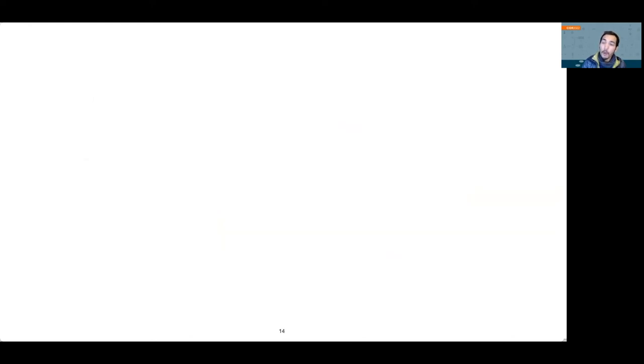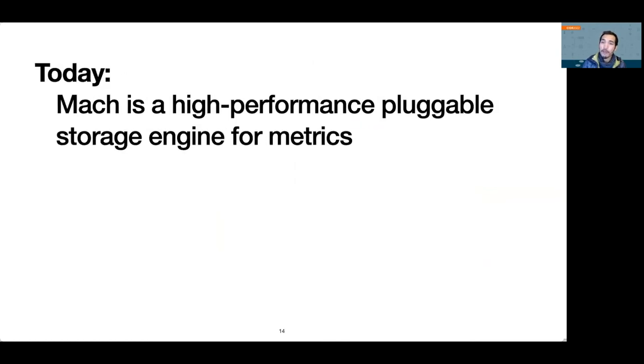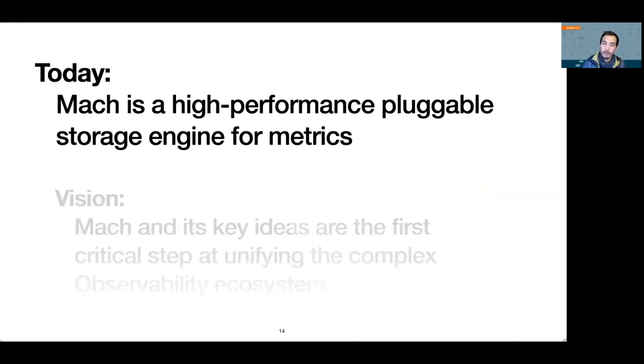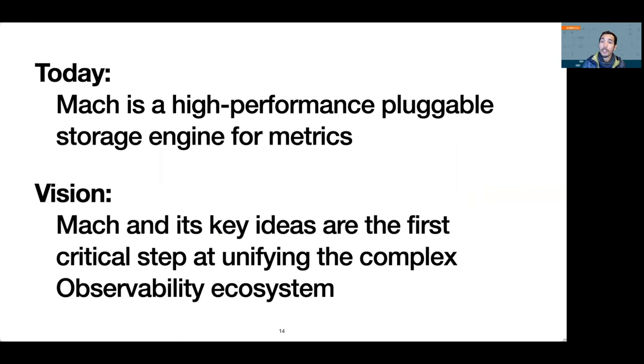So, where do we go from here? Today, we've shown that Mach is a high-performance pluggable storage engine for metrics and observability. Mach is a critical library in our broader vision of the observability ecosystem. Although many parts of the ecosystem exhibit similar workload characteristics as metrics, we've previously observed that it is still a hodgepodge of tools.